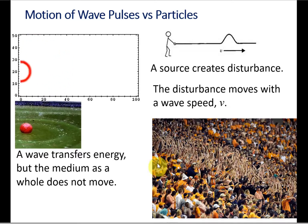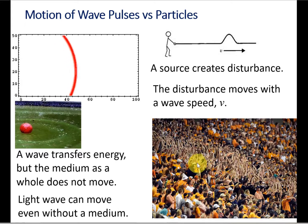Waves that need a medium to travel are called mechanical waves. Sound waves cannot travel in a vacuum. On the other hand, light waves can pass through vacuum space. This reminds me of the sunlight. Such waves are called electromagnetic waves.